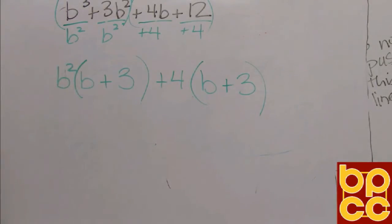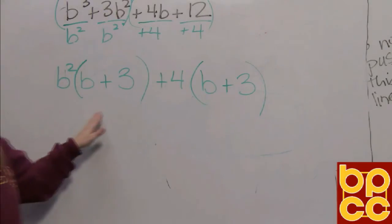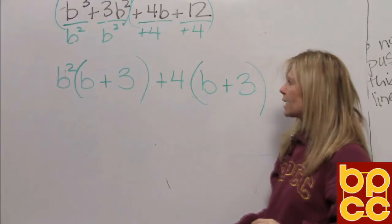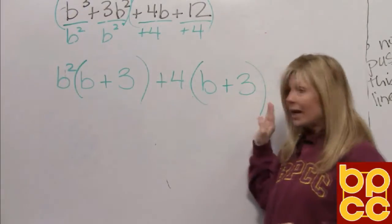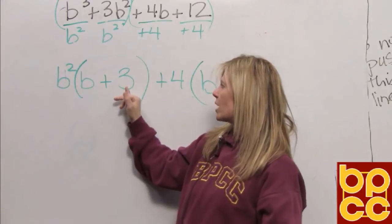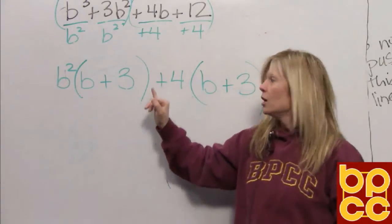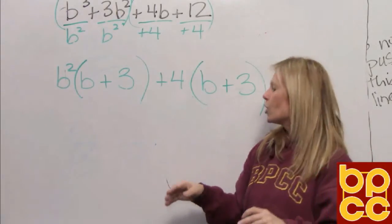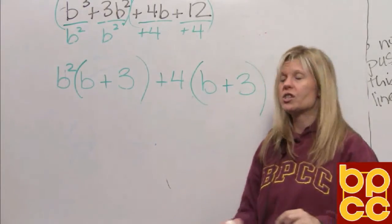So if you notice, we did the GCF rule twice. Now, this is not the final answer because it is not still connected by multiplication. Because when you read this expression, it's read B squared times B plus 3 plus 4. So that plus 4 is not connected by multiplication. So what you're going to do is you're going to use the GCF rule again.